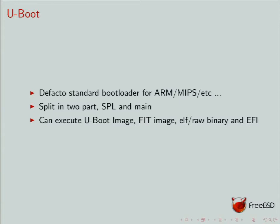U-boot can execute multiple types of executables. The first is the U-boot image, a specially crafted image format which we are not using on FreeBSD — NetBSD uses it to boot their kernel. Recently, the FIT image was added — Flattened Image Tree — described using DTS syntax. It supports ELF and raw binary, which we use on FreeBSD to boot our loader, and also EFI support added about a year ago.